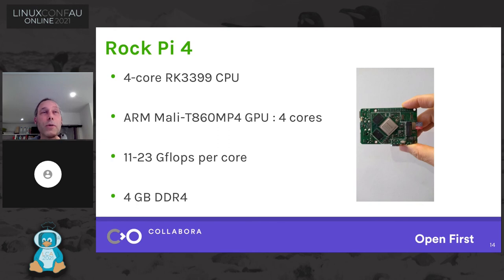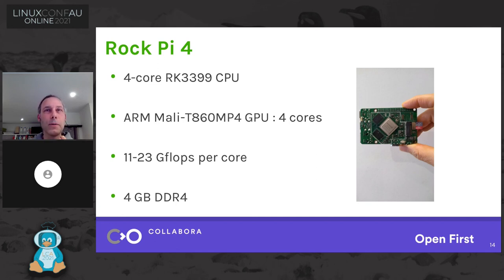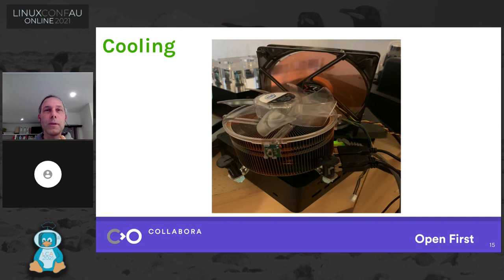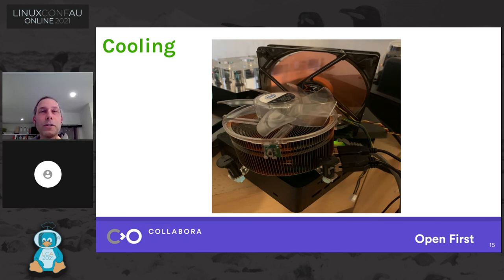In terms of the hardware, we chose the RockPi 4, which is a very nice system. It's got a four-core CPU, four-core Mali GPU, and four gigabytes of DDR RAM. These systems unfortunately run a little hot, so here's Marcus's cooling solution — the chip is buried somewhere underneath that huge fan. But don't try this at home; the alternative is just to use a large heatsink instead of the fan.